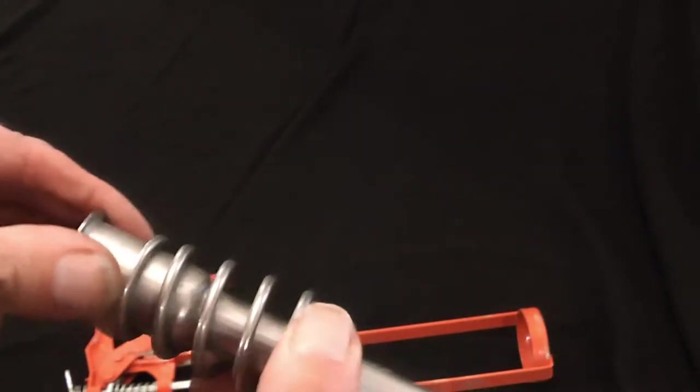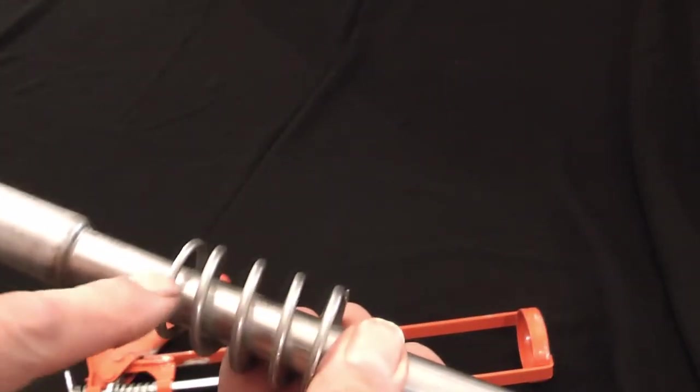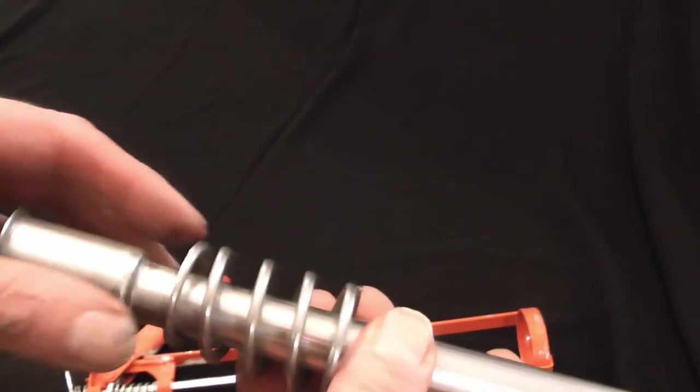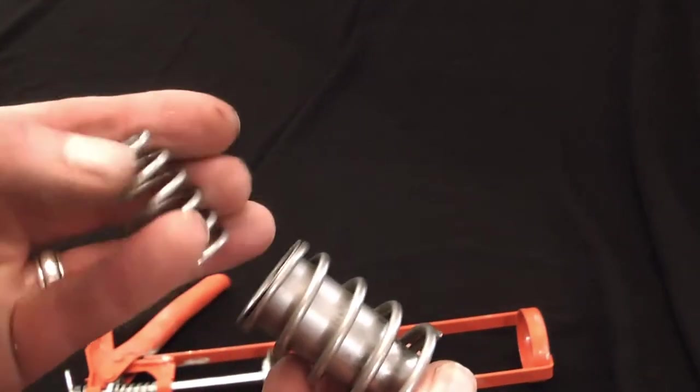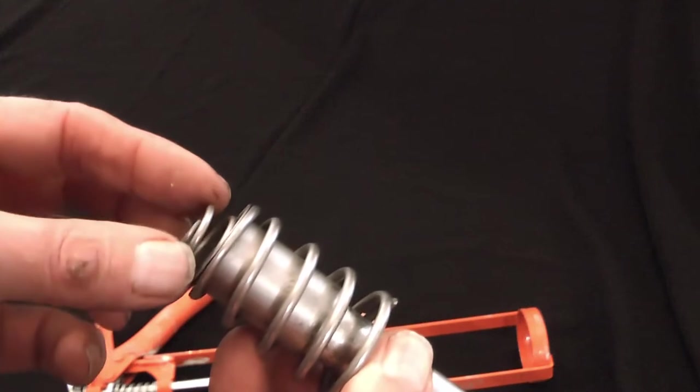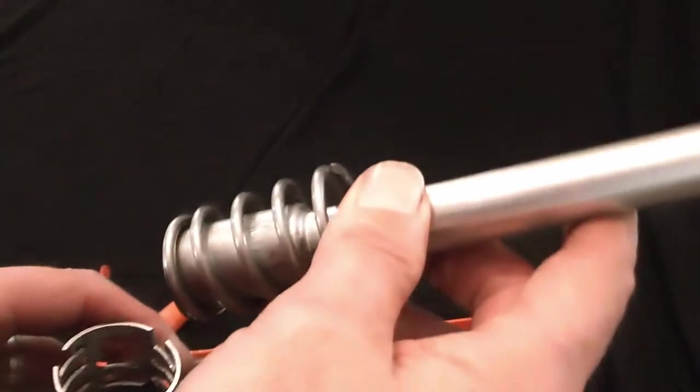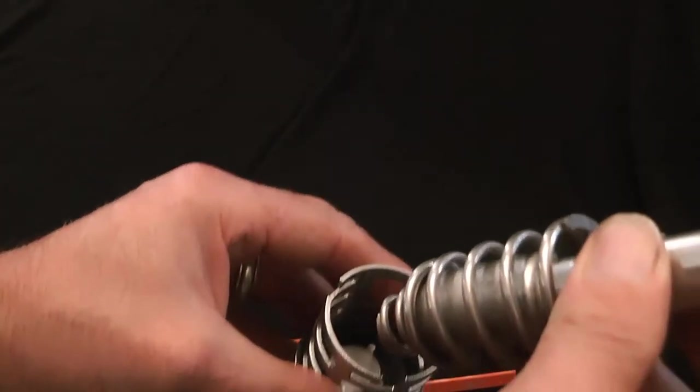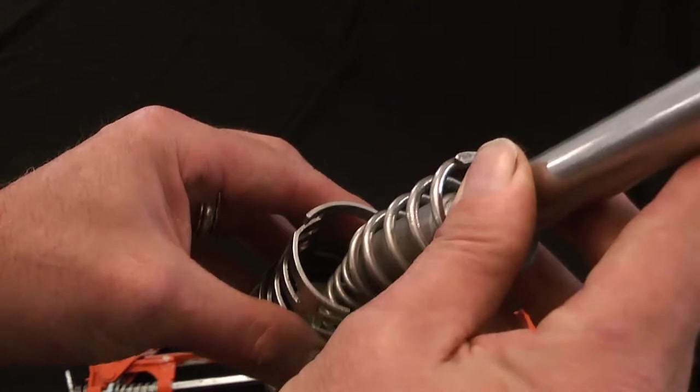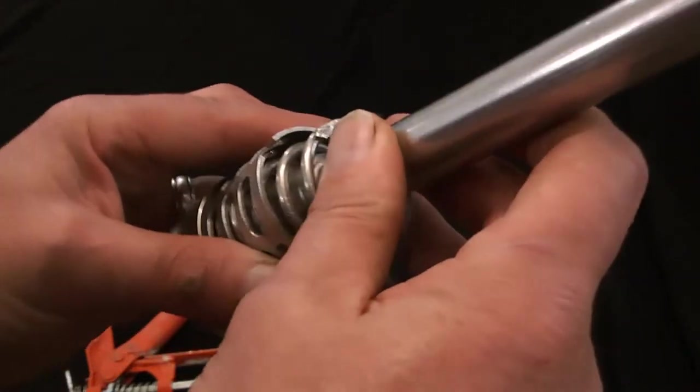To reassemble it, make sure you've got the springs with the small end on the end of the spear like that, tight. The inner spring should have the small end facing outwards again. Then you get the main body and just place it together.